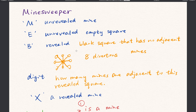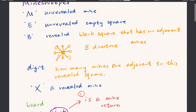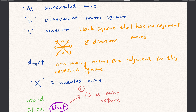Let's understand the different meanings of different chars. M is unrevealed mine. E is unrevealed empty square. B is the revealed blank square that has no adjacent mines — this means all eight directions: above, below, left, right, and two diagonals. We use a digit to indicate how many mines are adjacent to this revealed square. And X is a revealed mine.